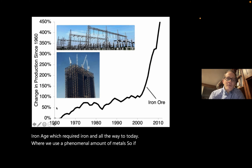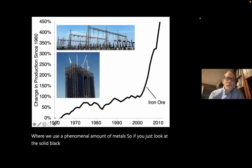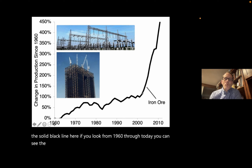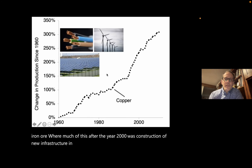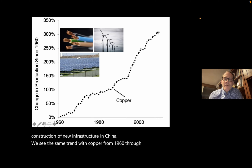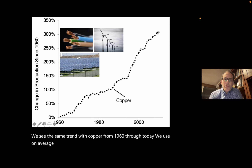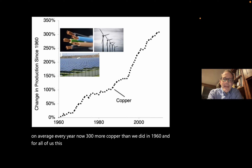If you look at the solid black line from 1960 through today, you can see the tremendous increase in the growth of global consumption of iron ore, where much of this after the year 2000 was construction of new infrastructure in China. We see the same trend with copper — we use on average every year now 300% more copper than we did in 1960. This motivates the science that we do.